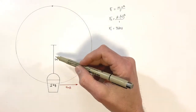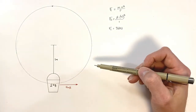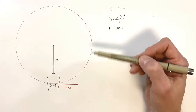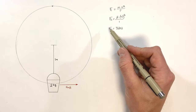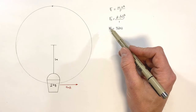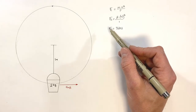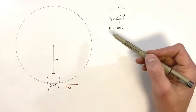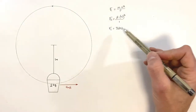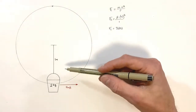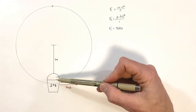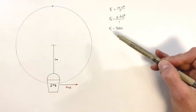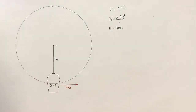It's tempting to say the tension in the string is going to be 32 newtons, but that's not true. Remember, centripetal force is the net force acting on an object — so we have a net force of 32 newtons. To better understand what's contributing to this net force we need to draw a free body diagram showing all the forces acting on this bucket.